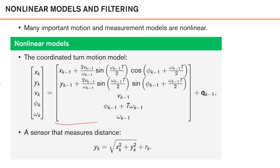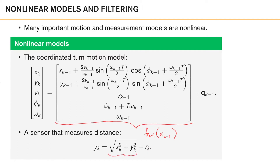Additionally, many important sensors measure the distance to an object — this is true for radars, cameras, stereo cameras, and laser scanners, to name a few. If the state vector describes the position of the object in Cartesian coordinates, the distance to the object becomes a non-linear function of the state. So with these sensors we have a non-linear measurement function hk of xk.